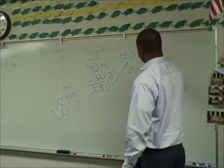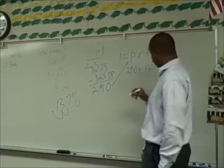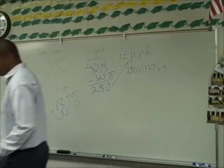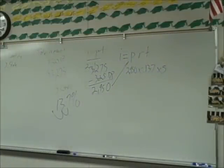And then time, how much time? Five years. So now if you have your calculator, we'll go ahead and say 2,950 times 0.137 times five years equals 2,020.75.